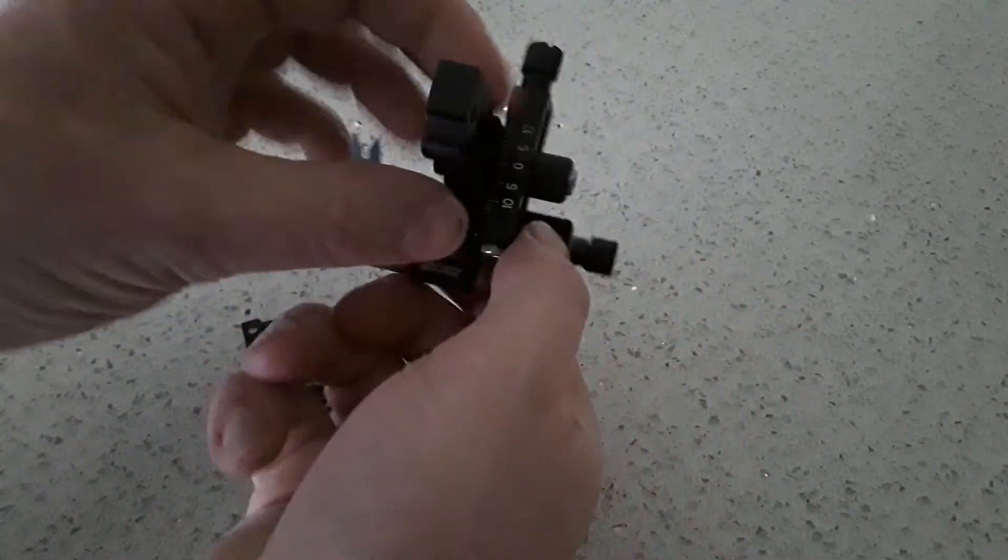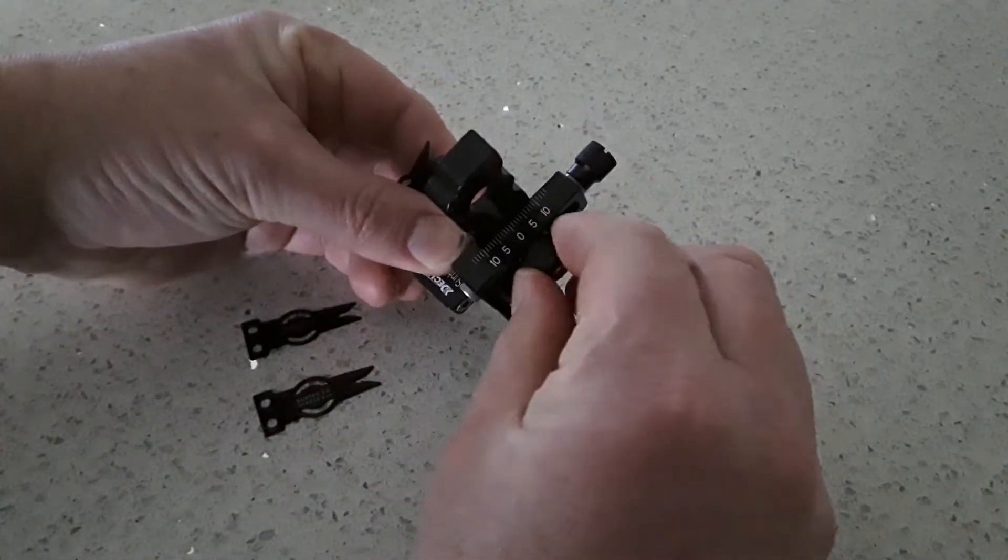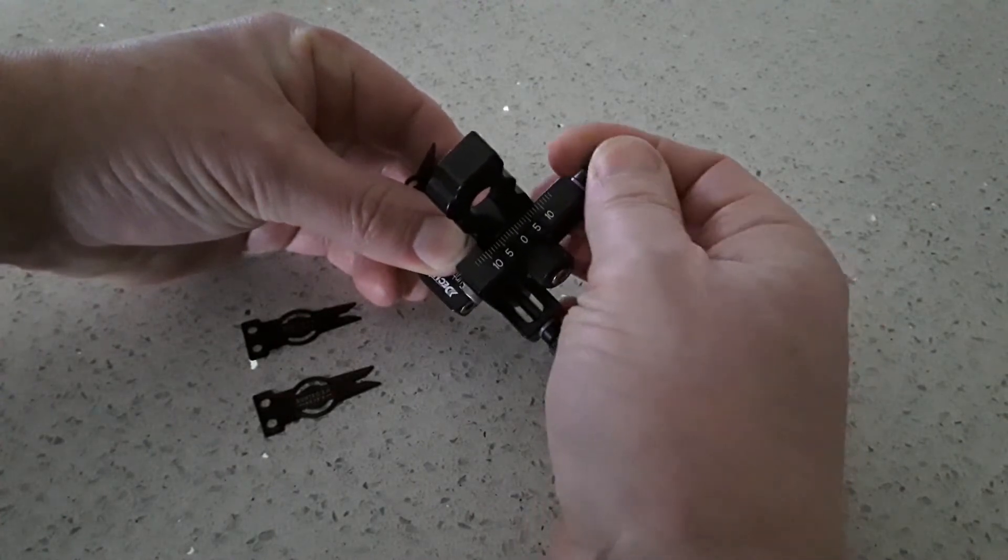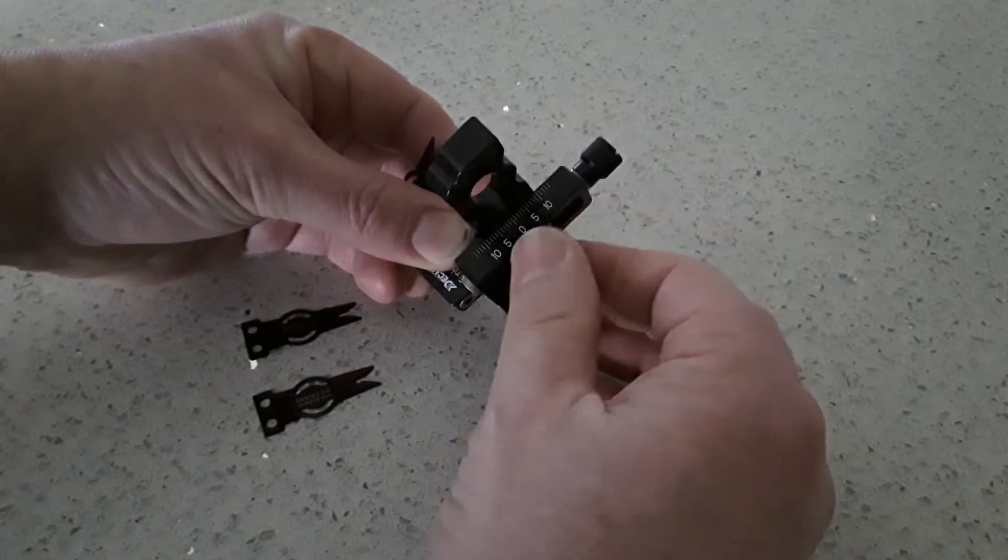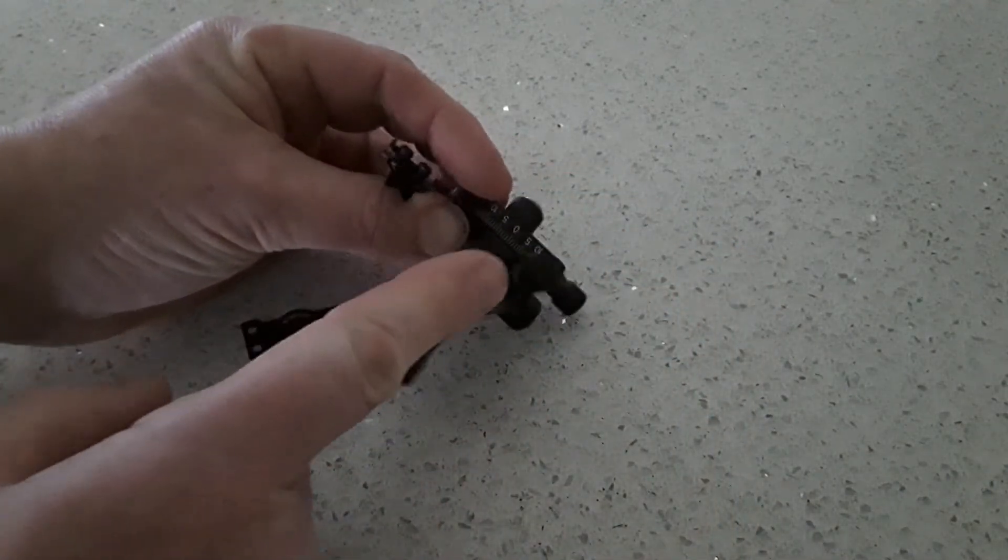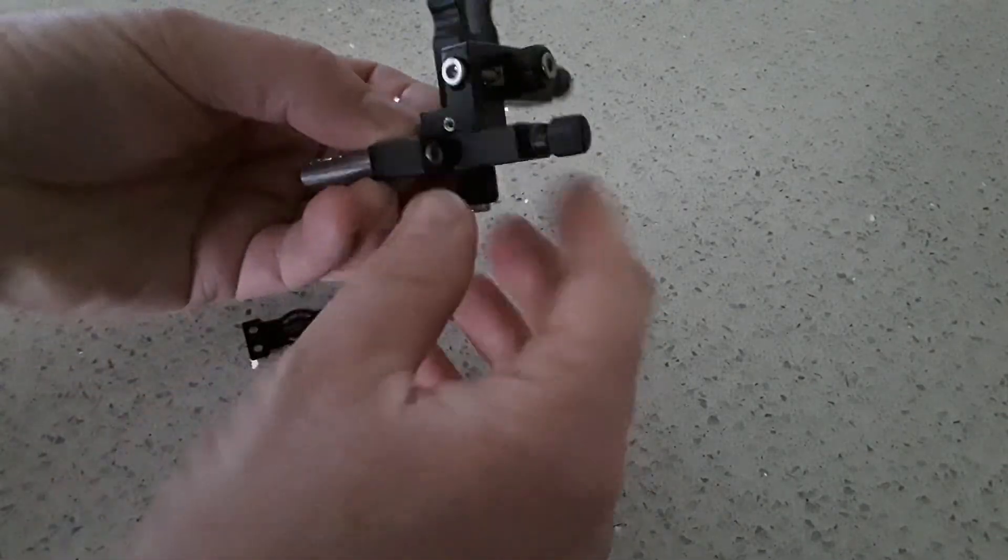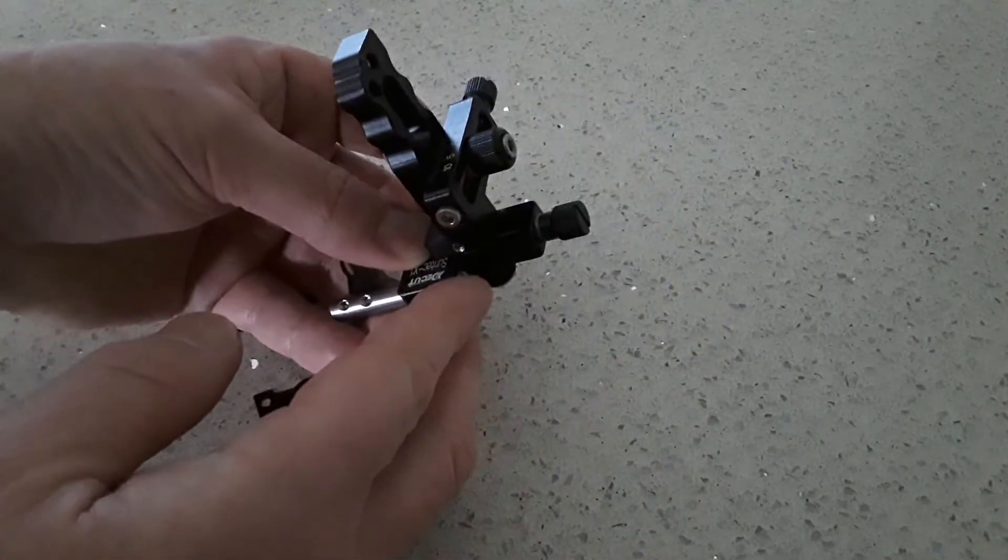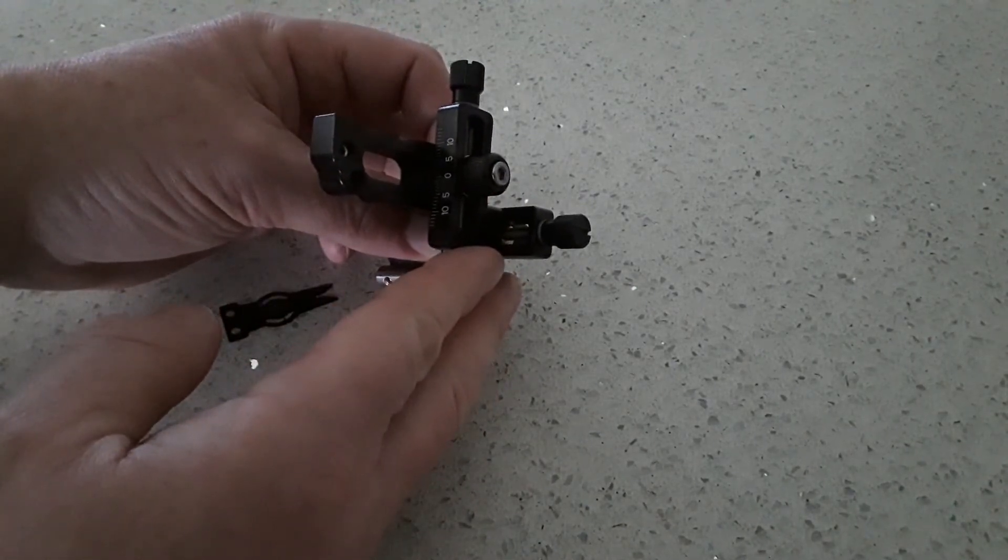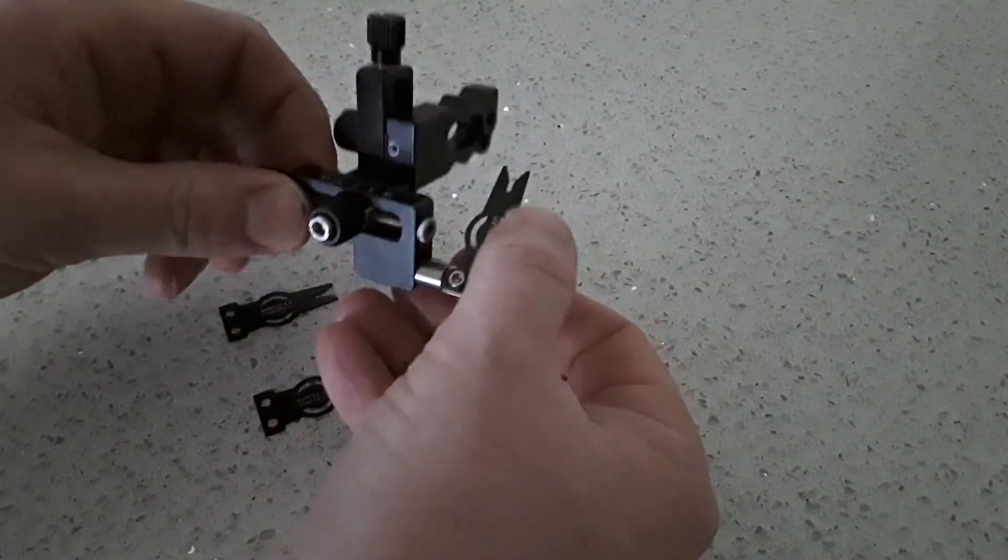You get the same thing on the back here. You just loosen that center one and then turn the top and bottom for the height. You also get some indented screw head indents as well, so if you had trouble turning them with your hands, you could always do a slight adjustment with a screwdriver.